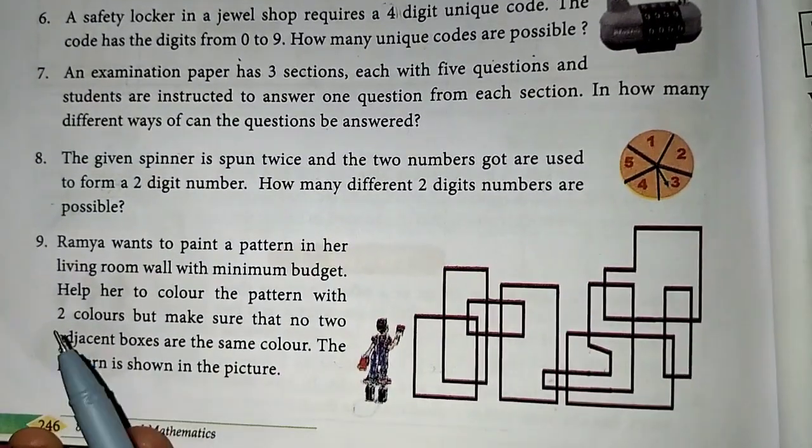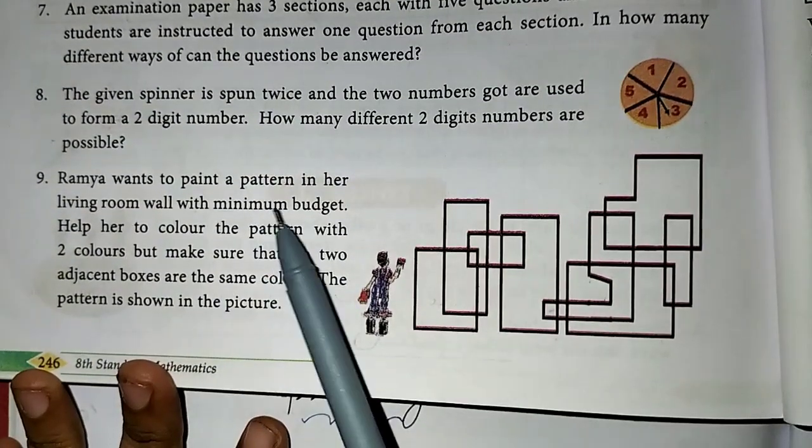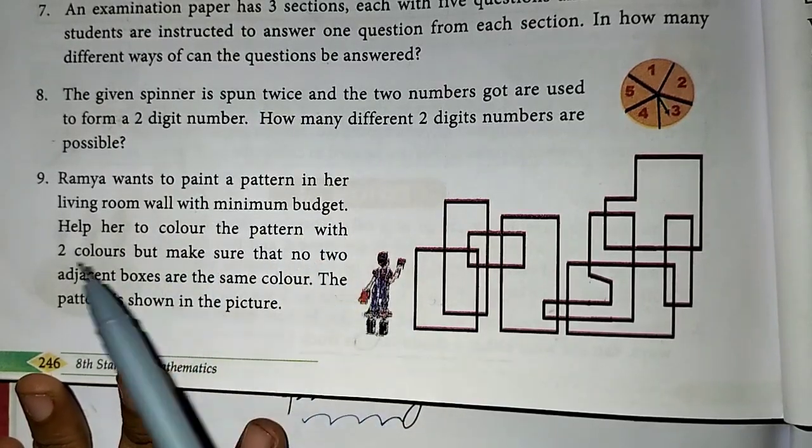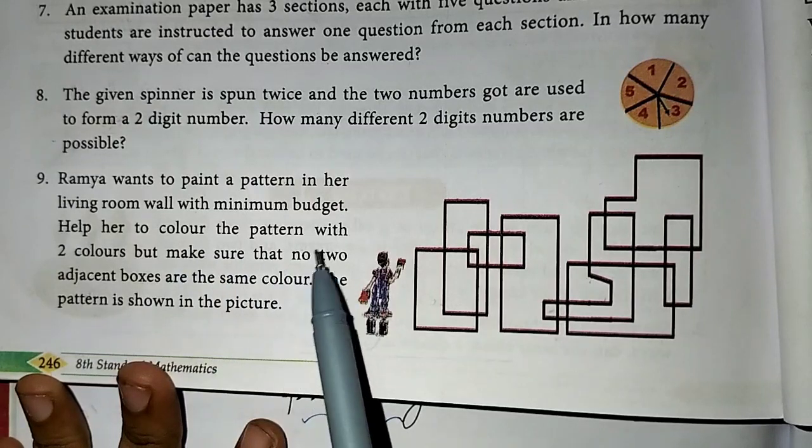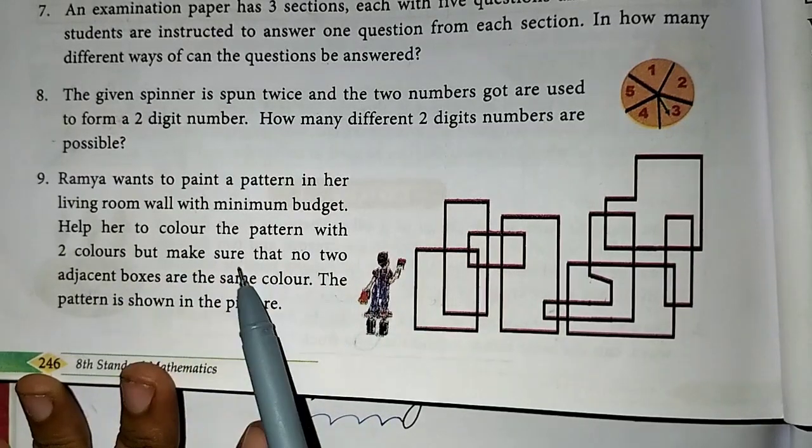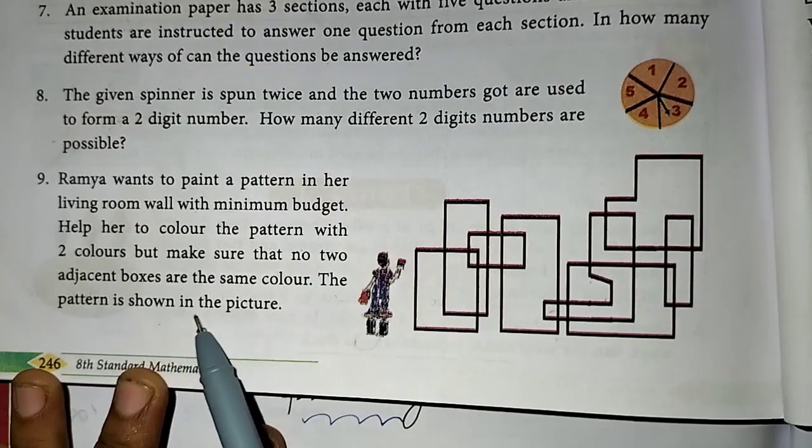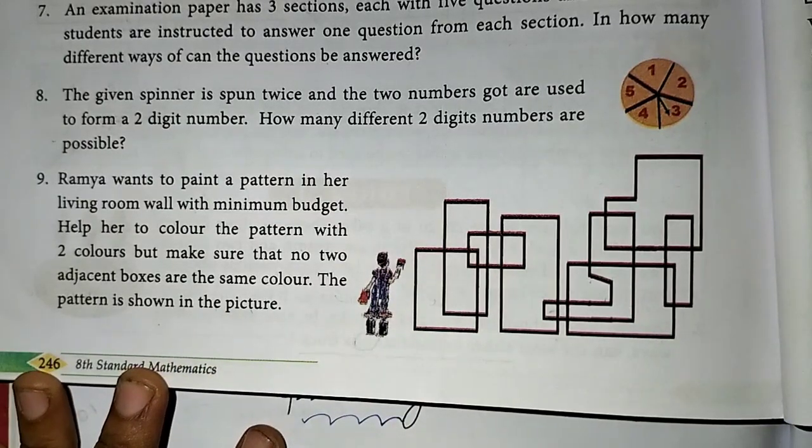In the problem, Ramya wants to paint a pattern in her living room wall with minimum budget. Help her to colour the pattern with two colours. But make sure that no two adjacent boxes are the same colour. The pattern is shown in the picture. This is Ramya.